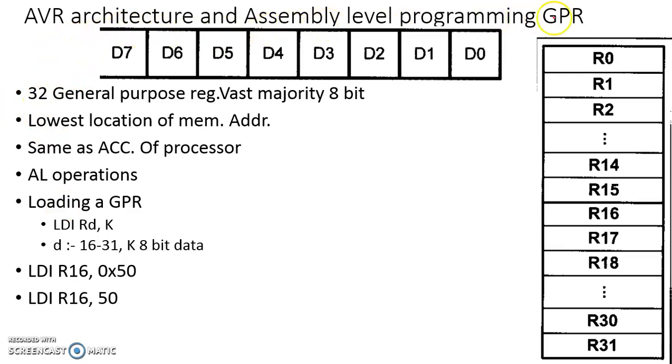AVR architecture and assembly level programming: The general purpose registers in AVR are 8 bit long, with bit pattern D0 to D7. There are 8 different flip-flops in these registers. In any AVR class of microcontrollers, there are 32 general purpose registers, and the vast majority are 8 bit registers.